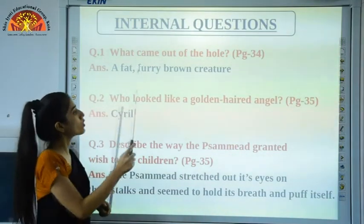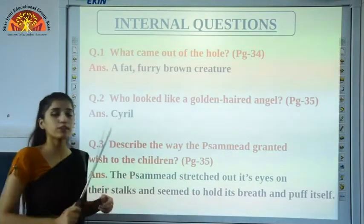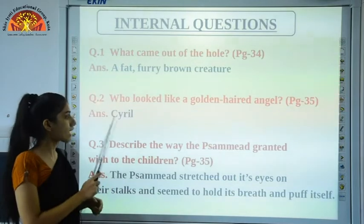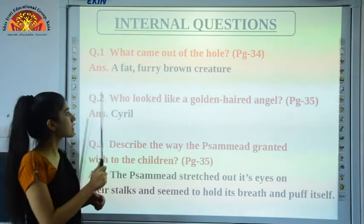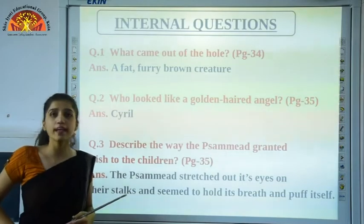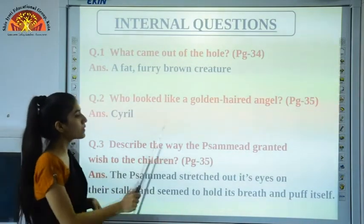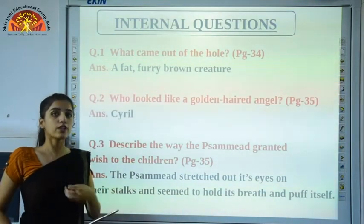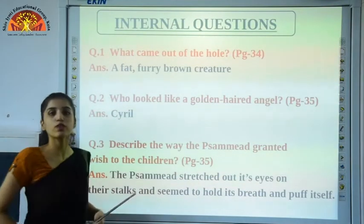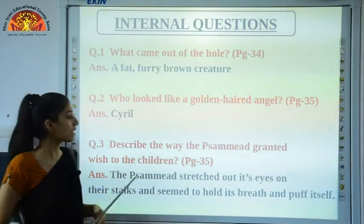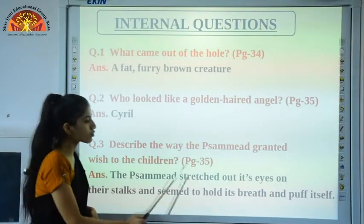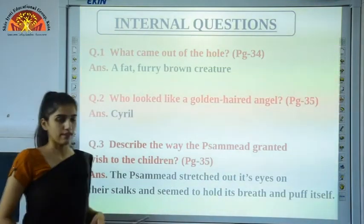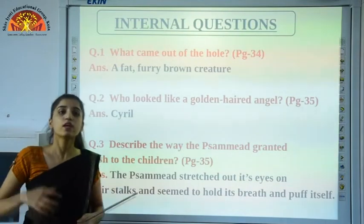Question number two: Who looked like a golden-haired angel? This question is on page number 35. The answer is Siren looked like a golden-haired angel. Question number three: Describe the way the Simeat granted a wish to the children. The answer, also on page 35, is: the Simeat stretched out its eyes on their stalks and seemed to hold its breath and puff itself.